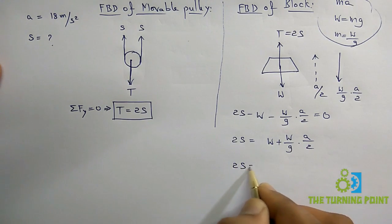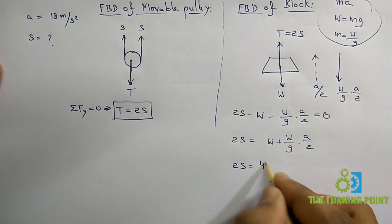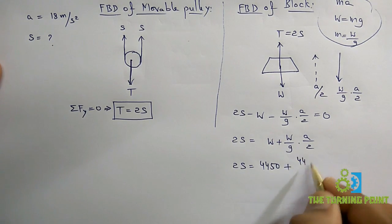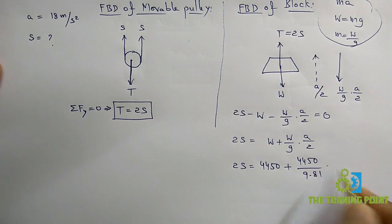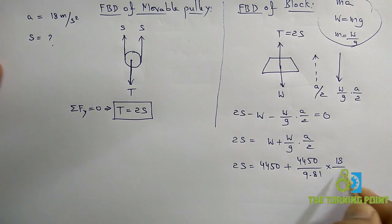From that 2S equals the weight of the block, which is given as 4450 newtons. That is given in the problem. 4450, acceleration due to gravity is 9.81, into acceleration of the block given as 18 meters per second squared by 2.